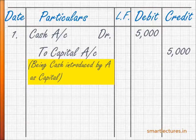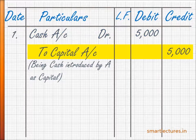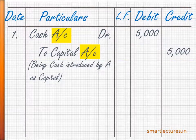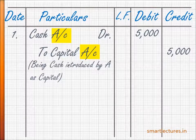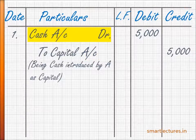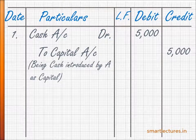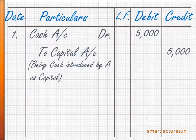So what we have done is created two aspects of the transaction — one debit aspect and one credit aspect. Notice that we write the word 'account' as a suffix, and when we pass journal entries, we write 'Cash Account Debit' but we write 'To Capital Account' instead of 'Capital Account Credit.' This is the format and presentation of writing journal entries. You have seen how I converted the transaction into a journal entry on the basis of specific rules.